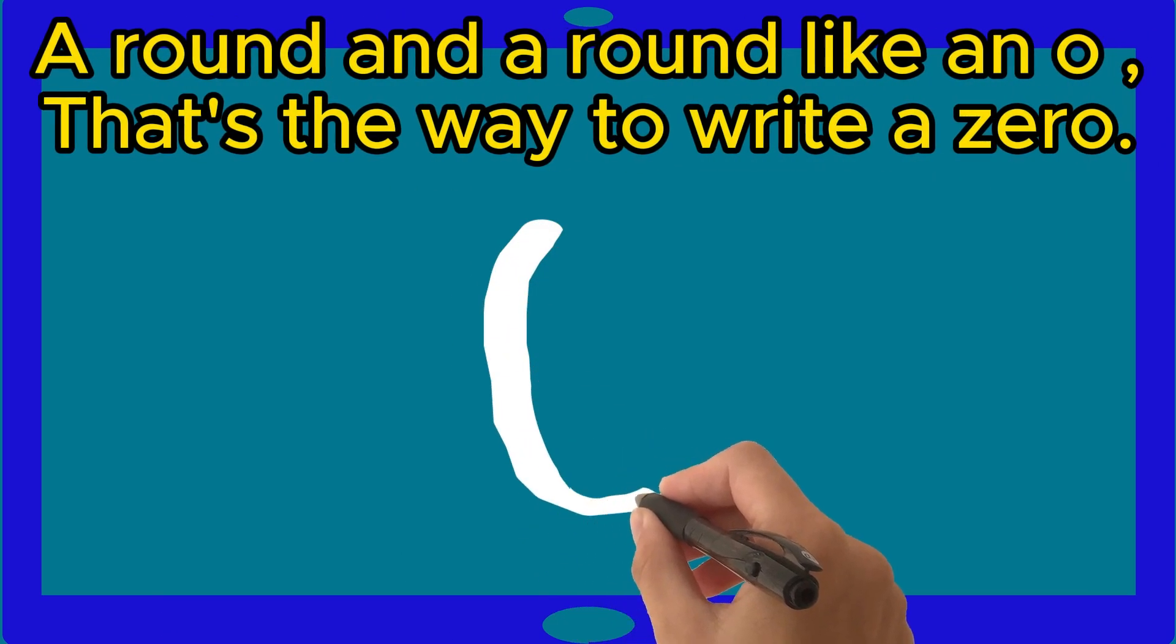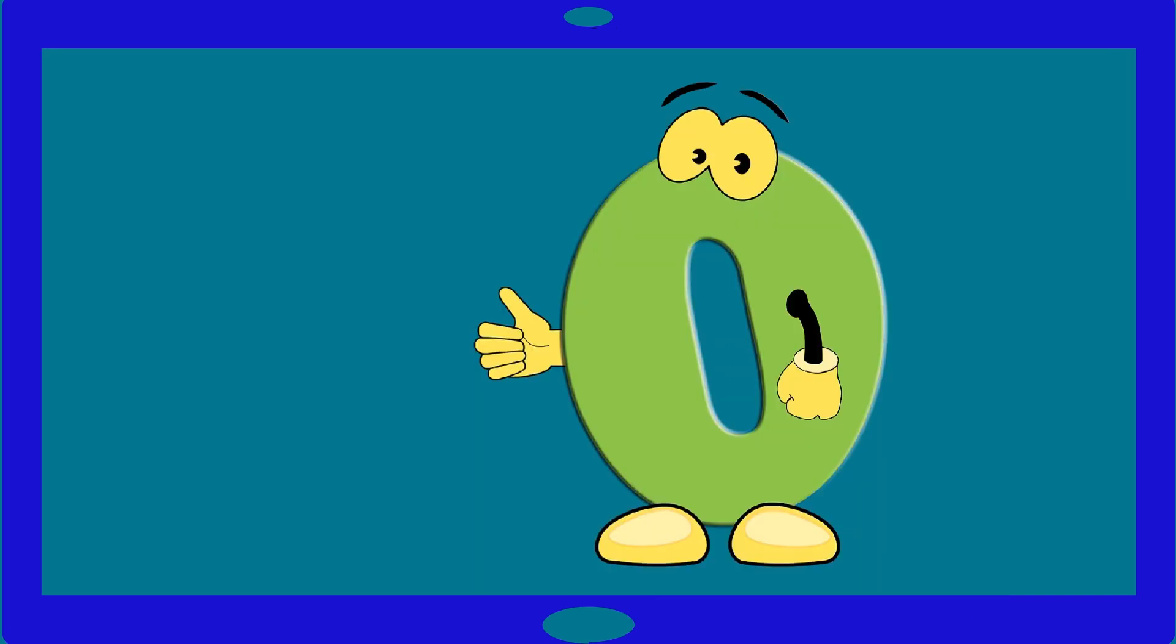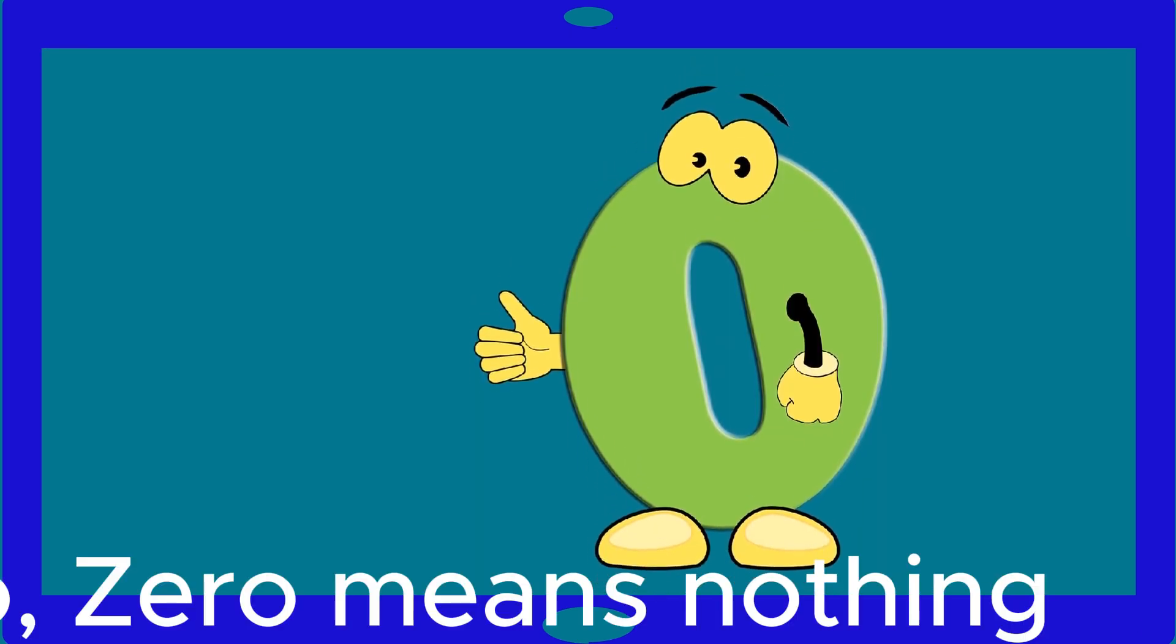Around and around like an O. That's the way to write a zero. Hey, I am zero. Zero means nothing.